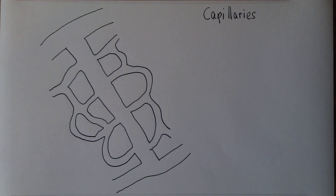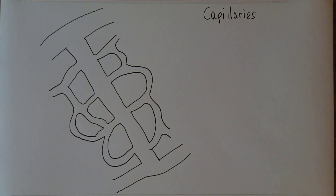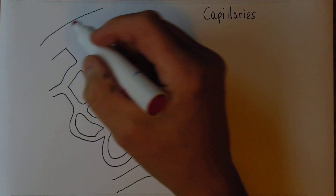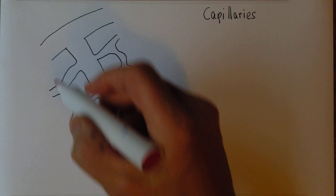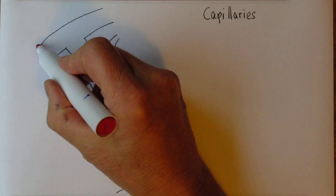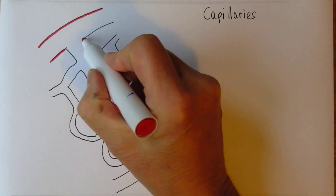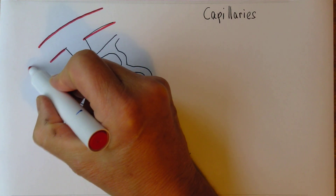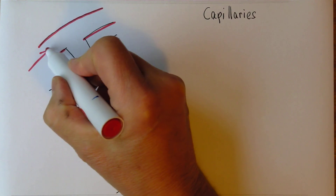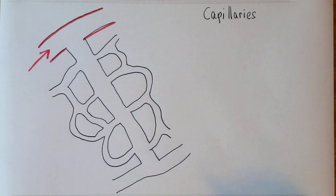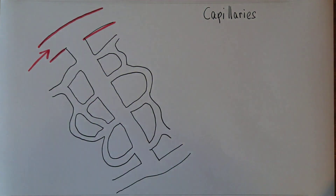The smallest of the blood vessels are the capillaries. The blood is going to come into the capillary network via an arteriole, which is bringing blood from the heart.